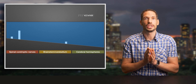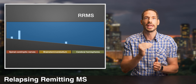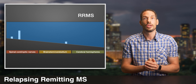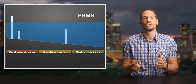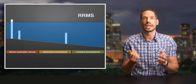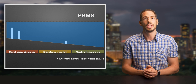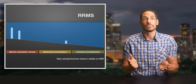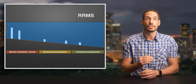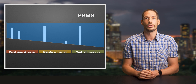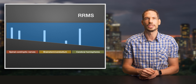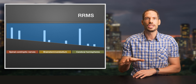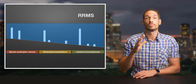A CIS might turn into RRMS. More neuroinflammation might occur, causing more lesions to rise from the bottom of our pool. Some might break the surface and be noticed; others can remain completely submerged. These hidden lesions might be picked up on an MRI scan, but not always. As the disease progresses, more lesions might appear.